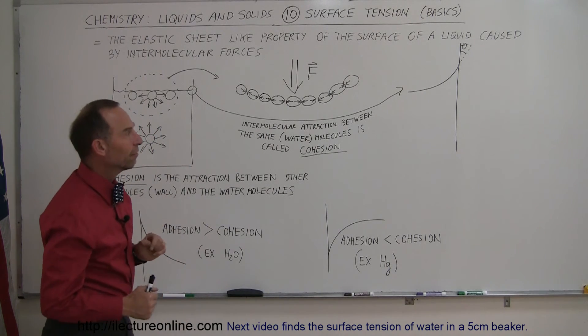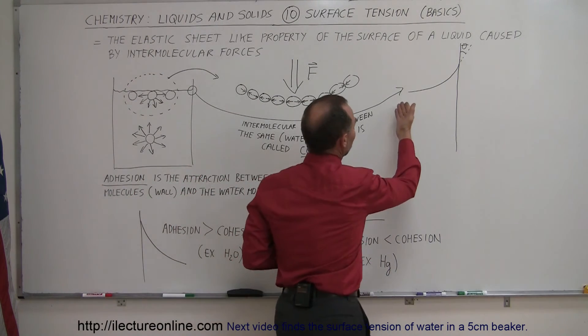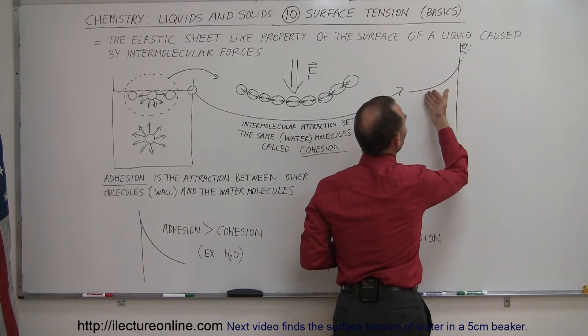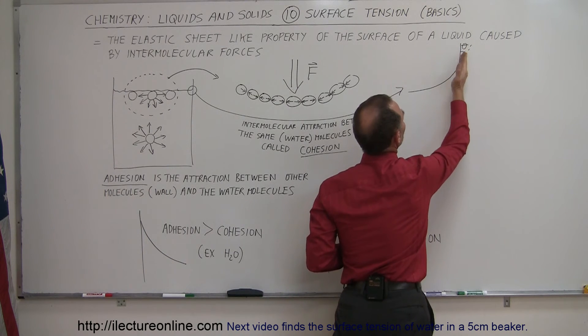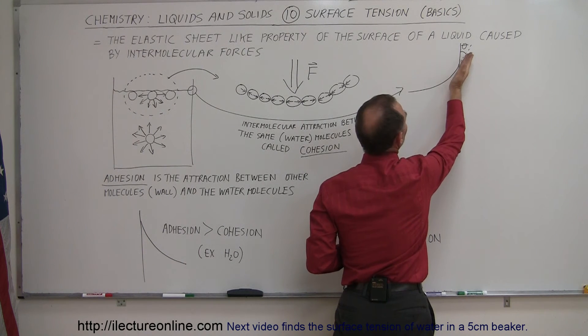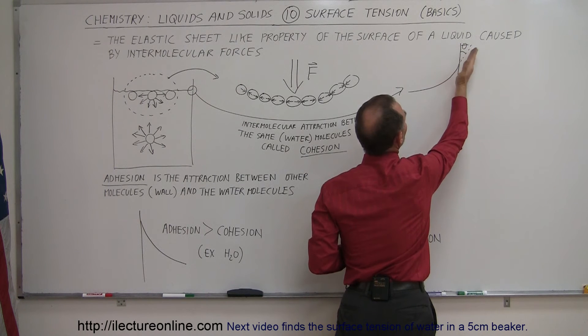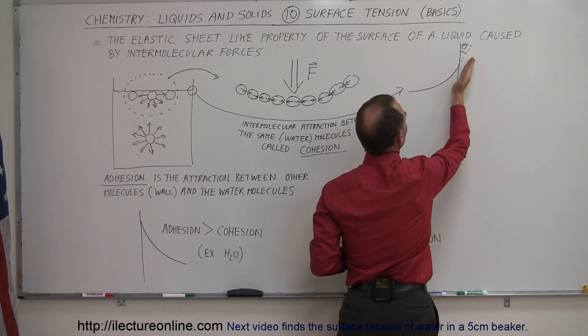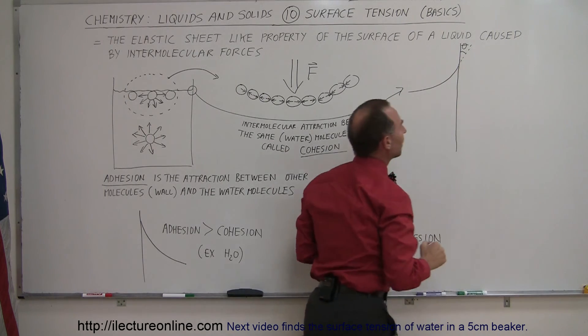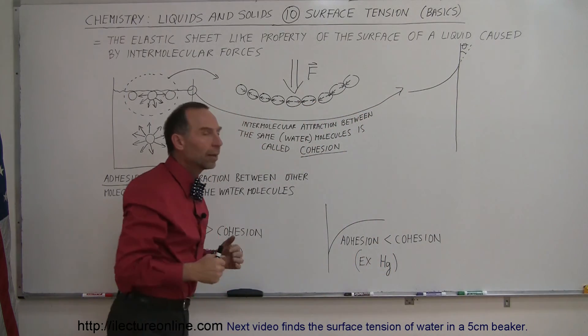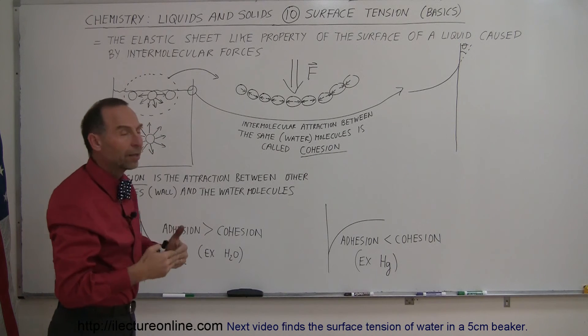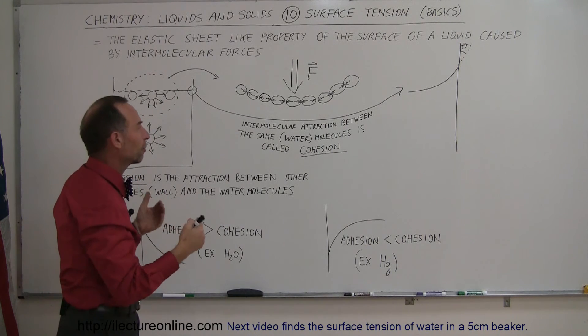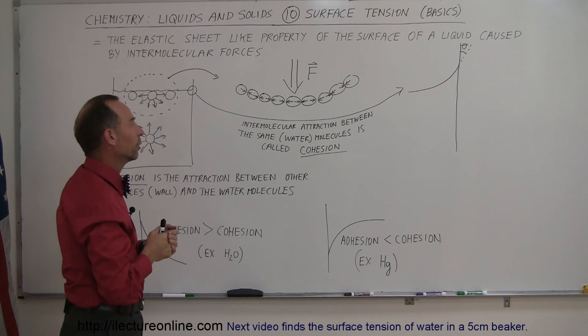What we need to figure out is, for example, if you have water in a beaker with a meniscus like this, we should be able to measure this angle. Sometimes the angle is less than zero degrees—sometimes the meniscus goes right up to the wall of the container, sometimes it doesn't. In the next video, we'll show you how to calculate the force caused by surface tension.